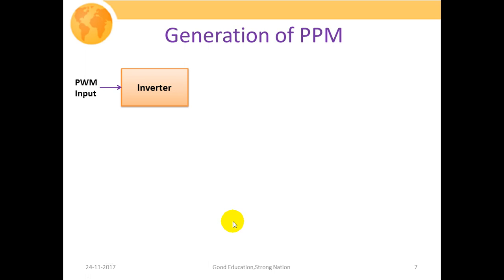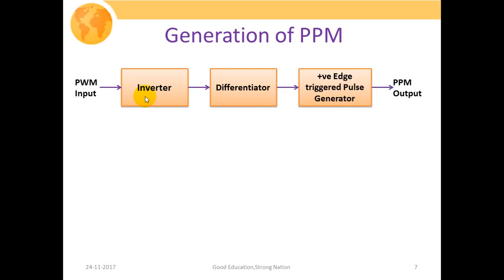Next, we discuss how to generate a pulse position modulated waveform from the pulse width modulated signal. Initially we apply the PWM waveform to an inverter, which inverts the incoming pulses — positive pulses become negative and negative pulses become positive. The output of the inverter is then passed through a differentiator, which produces impulses or short-duration pulses at the falling and rising edges. This differentiator output is then passed through a positive-edge triggered pulse generator, which generates fixed-duration, fixed-amplitude pulses.